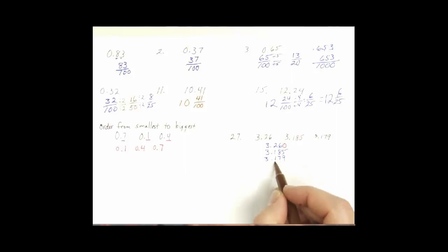But we can also look at them in groups of 3 since we all have three spots behind the decimal. I have 179, 185, and 260. See that zero made quite a difference when I put it in when we could read the numbers so they're all the same.